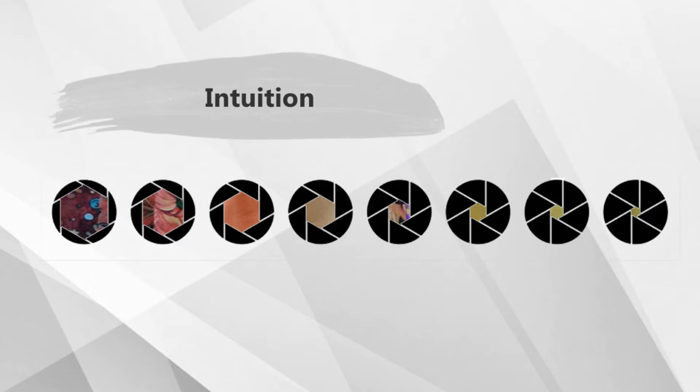Intuition: Some of us have more difficulty just using our eyes to find value. Many artists are able to look at colors, squint, and find value that way. This works similarly to how a smaller aperture works on a camera — less light allows the values to become more pronounced. This method depends on your individual ability to see the values.